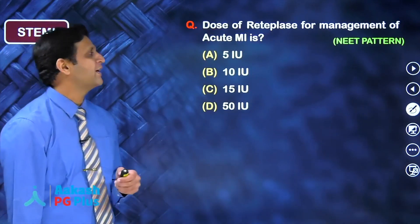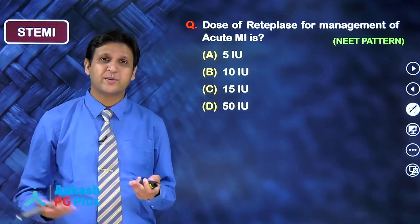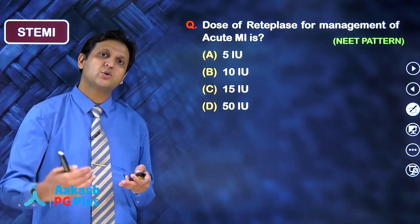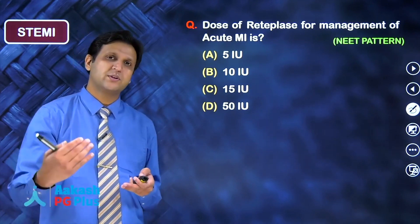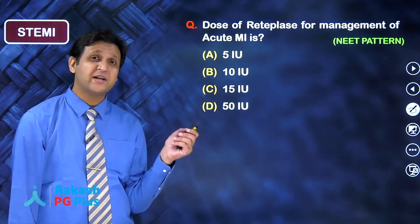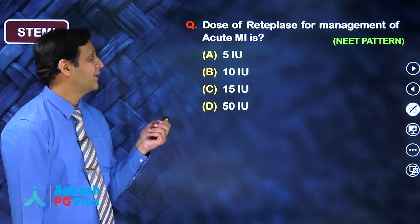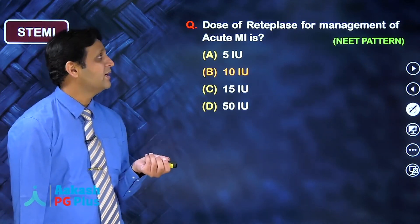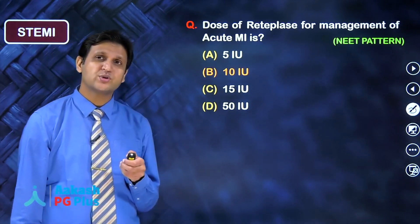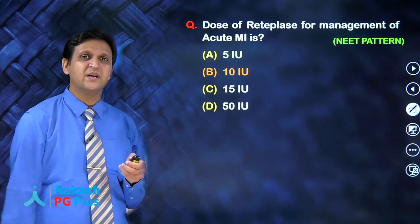Regarding thrombolytic drug doses: streptokinase is 1.5 million units in 100 ml normal saline given over 30 to 45 minutes. Reteplase is given as 2 boluses of 10 international units each. Tenecteplase dose is approximately half the body weight in milligrams.